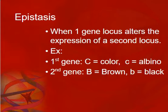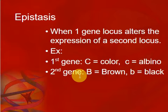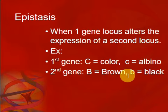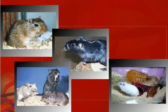Epistasis occurs where one gene influences a second gene. It's pretty rare, but it definitely does happen — we see it a lot in fur color, things like gerbils and hamsters. Multiple genes affect the expression of other genes. This is specific to gerbils: big C is color, little c is albino, big B is brown, little b is black.